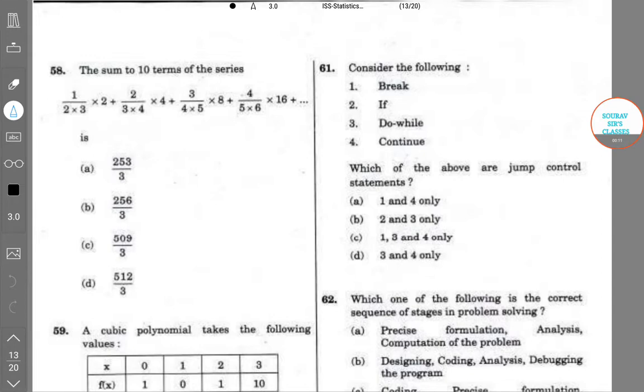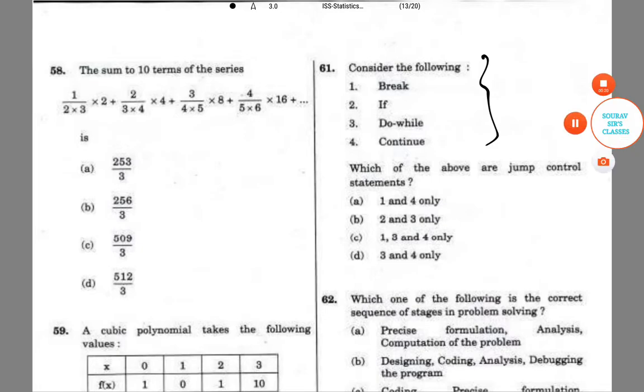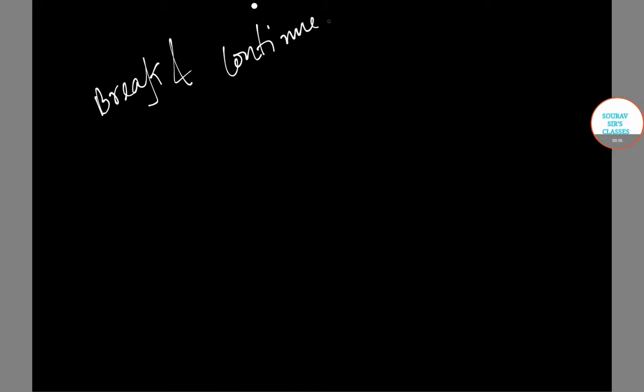We are given the following: break, if, do-while, and continue. Which of the above are jump control statements? So for jump control statements we have the break and continue. So 1 and 4 are correct, that is option A is the right one.